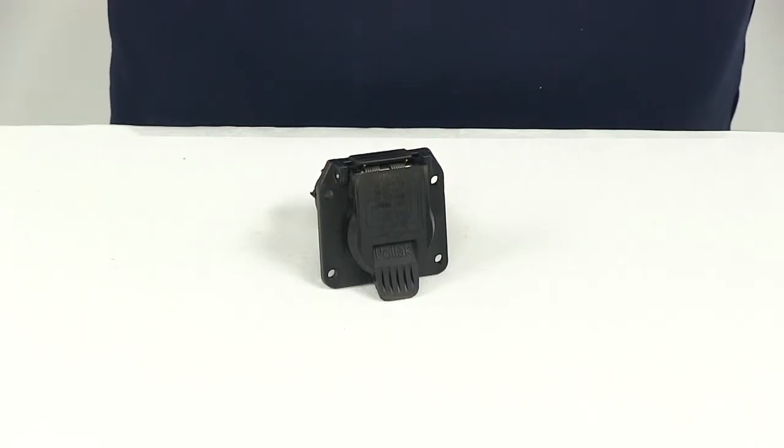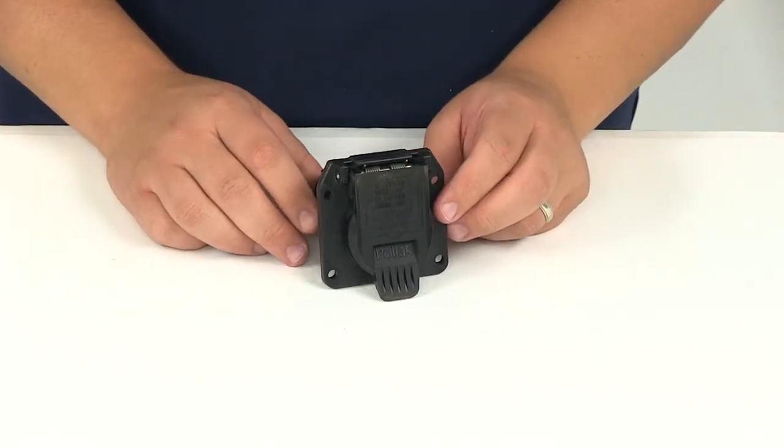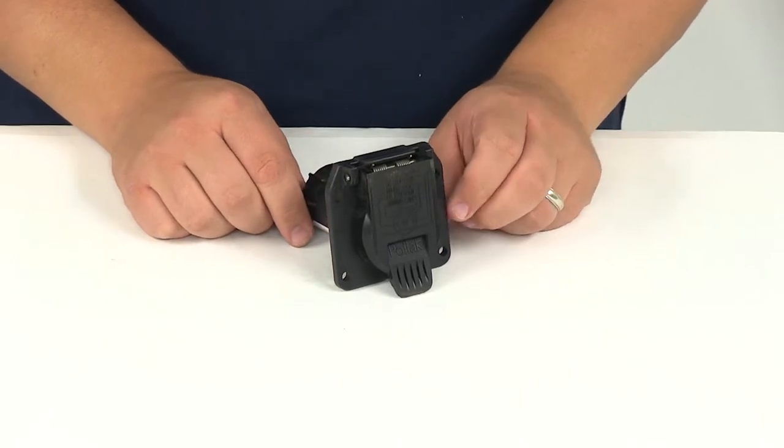Today we'll be reviewing part number PK-11893. This is the Pawlik Replacement 7-Pull RV-Style Trailer Connector.